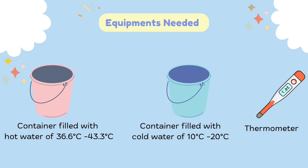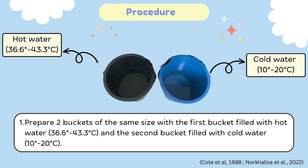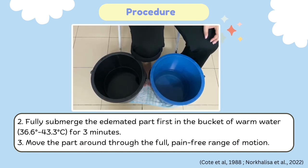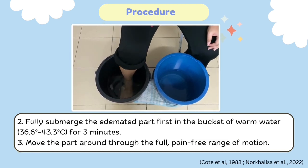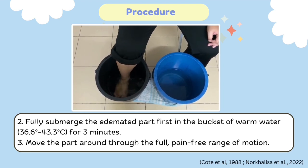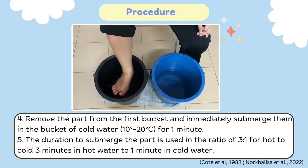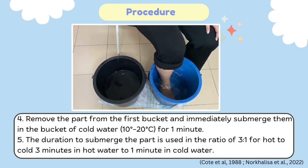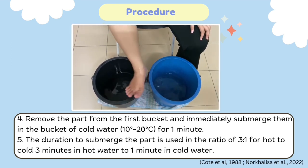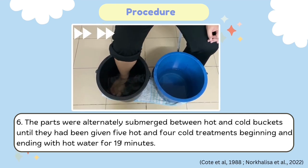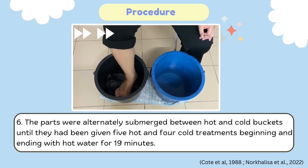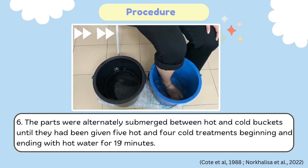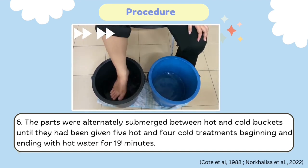The equipment needed are containers filled with hot and cold water at their respective temperatures, and also a thermometer. To start the treatment: firstly, prepare 2 buckets filled with hot and cold water respectively. Then, fully submerge the affected part in the bucket of warm water for 3 minutes and move the part through the full, pain-free range of motion. After 3 minutes, remove the part and immediately submerge it in the bucket of cold water for 1 minute. The ratio used for hot to cold treatment is 3 to 1. The patient will alternately submerge between hot and cold buckets until they have received 5 hot and 4 cold treatments, beginning and ending with hot water, for a total of 19 minutes.